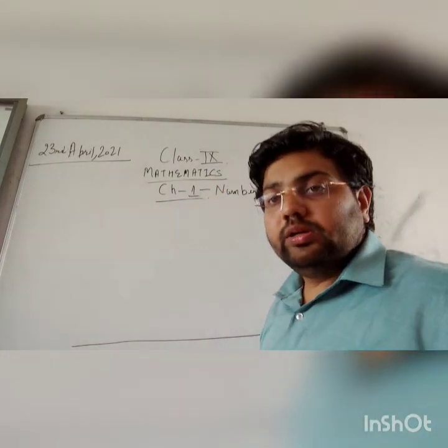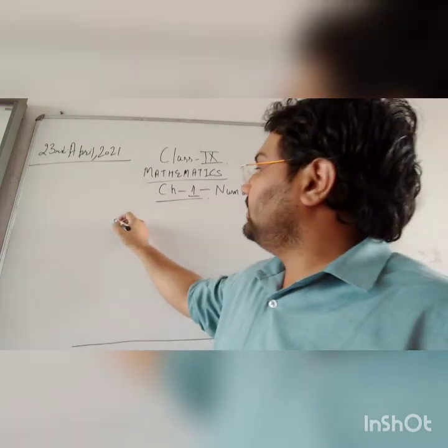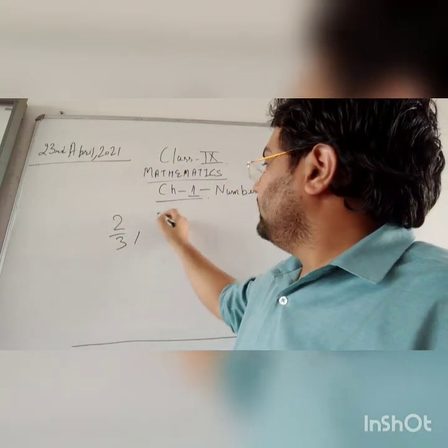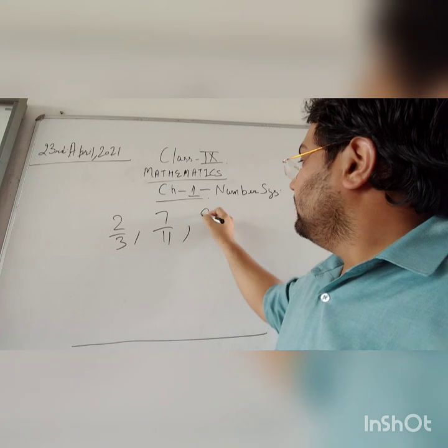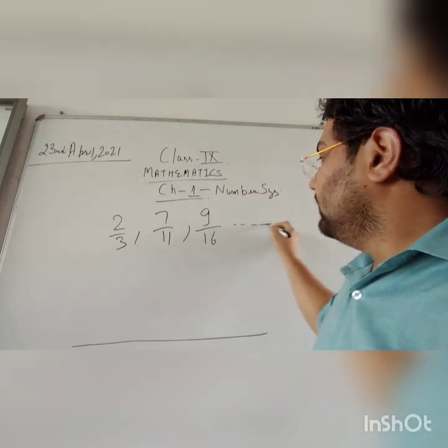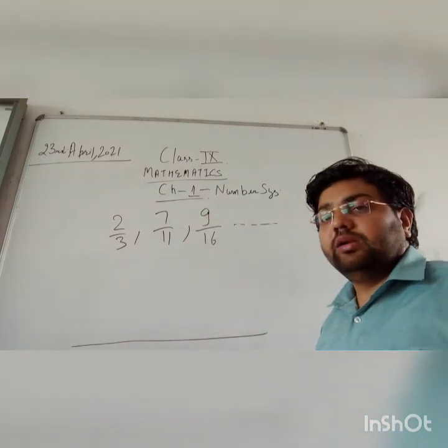Like if I am talking about the P by Q form, you can say 2 by 3, 7 by 11, 9 by 16. All of these are rational numbers.